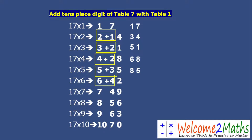17 sevens: 7 plus 4 is 11, write 9 as it is — so it's 119. 17 eights: 8 plus 5 is 13, then 6 — so it's 136. 17 nines: 9 plus 6 is 15, write 3 as it is — so it's 153.